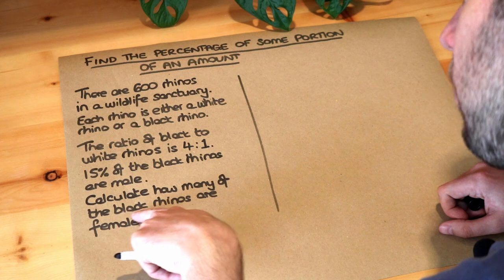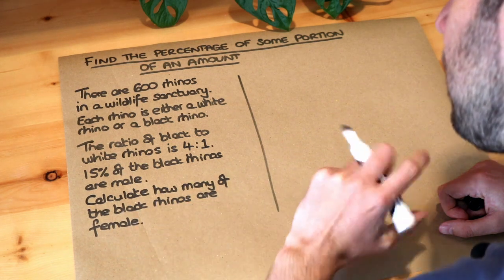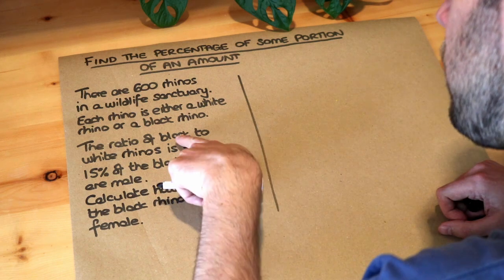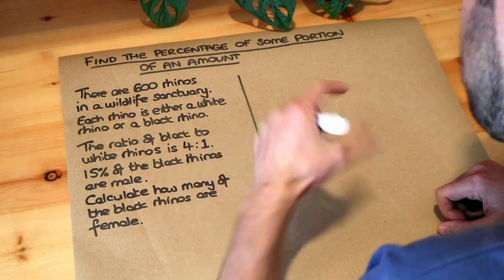Now we're trying to work out how many black rhinos are female. So let's work out the number of black rhinos first. We're told that the ratio of black to white is four to one.